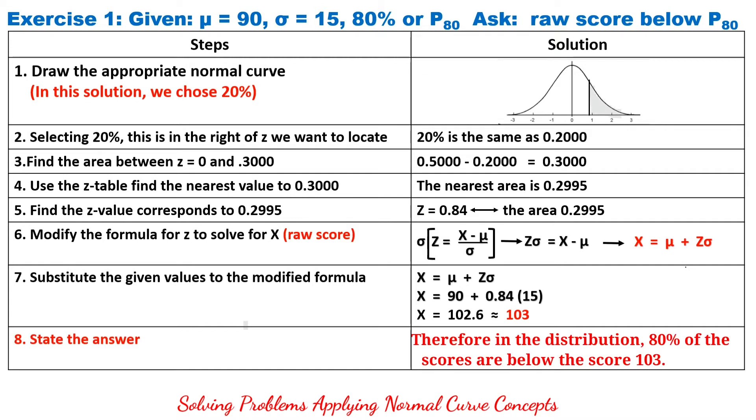Therefore, in the distribution, 80% of the scores are below the score 103.